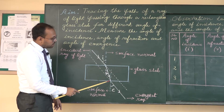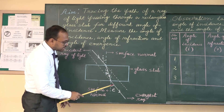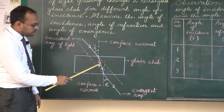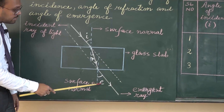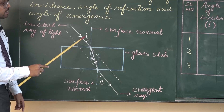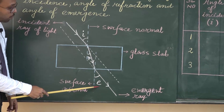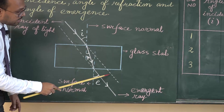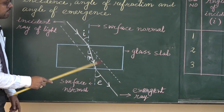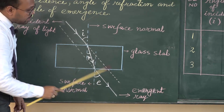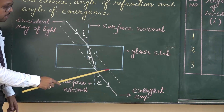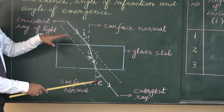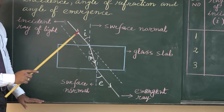When this ray falls on the second surface, it comes outside — this ray is called the emergent ray. The emergent ray makes an angle with the normal drawn at the surface of emergence; this is called the angle of emergence. The angle of incidence and angle of emergence are equal because these two rays are parallel. If we extend the incident ray, we get a shifting — this is called lateral shifting. The extended incident ray and the emergent ray are parallel, and we will observe this in our practical.